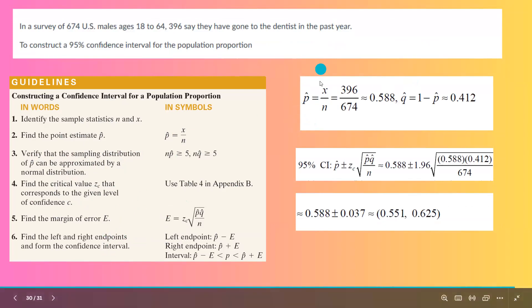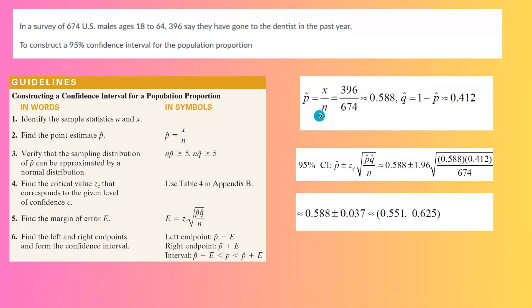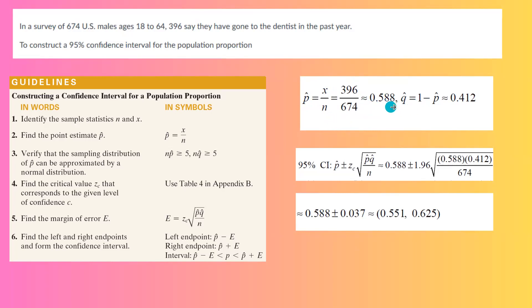p-hat in this case is x divided by n — the number of people who said they actually went to the dentist last year — which is 396 over 674, which is going to be about 58.80% or 0.588.